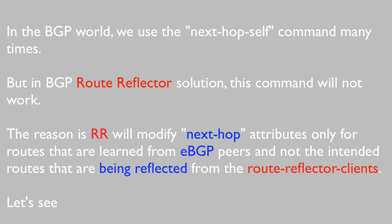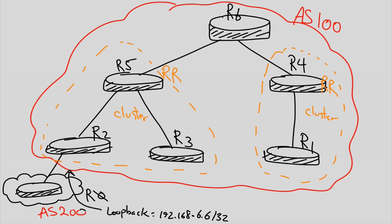Let's see this issue in our scenario and check out what the workaround is. In our topology, we have R5 and R4 as route reflectors. R2 and R3 are in one cluster and both of them are route reflector clients. R2 connects to R0 with eBGP. R1 is the route reflector client of R4, and finally R6 is a non-client.